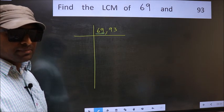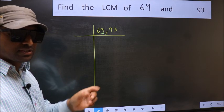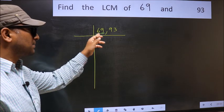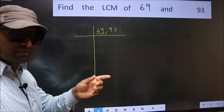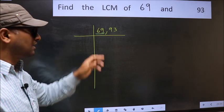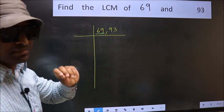To check divisibility by 3, we should add the digits. 6 plus 9, we get 15, and 15 is divisible by 3. So this number is also divisible by 3.